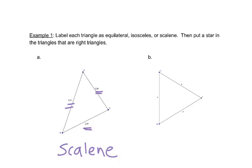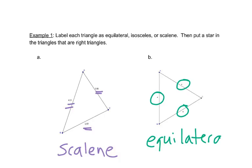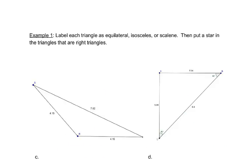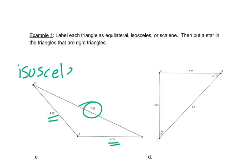If we look at B, this side is 4, this side is 4, and this side is 4. So those are all the same length, so we have an equilateral triangle. C has a 4.15 here and a 4.15 here and 7.62 here. That's two sides that are the same, so we call it an isosceles triangle.